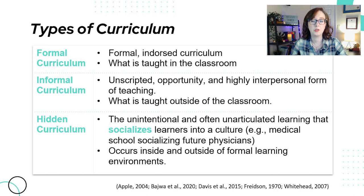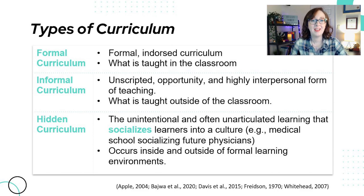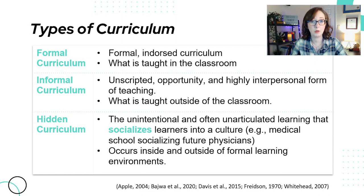Informal curriculum is the more opportunistic, unscripted teaching that occurs — for example, informal teaching you may receive in practicum placements, learning that occurs outside of formally designated learning spaces like staff rooms, hallways, and the med room. Hidden curriculum — the third type — is the unintentional and often unarticulated learning that socializes learners into a culture. For example, medical school teaches medical students the attitudes and behaviors supposedly required to play the role of the doctor well. These practices and structures can inadvertently contribute to maintaining inequities in our society.